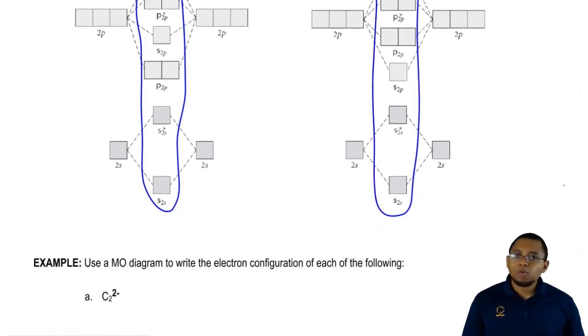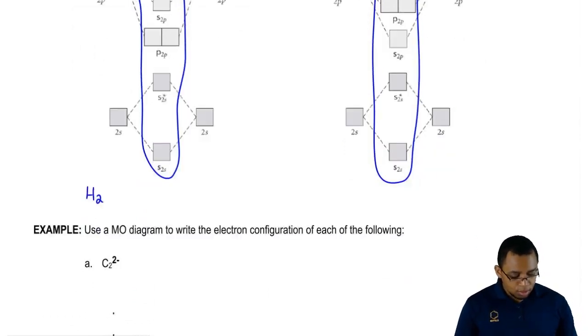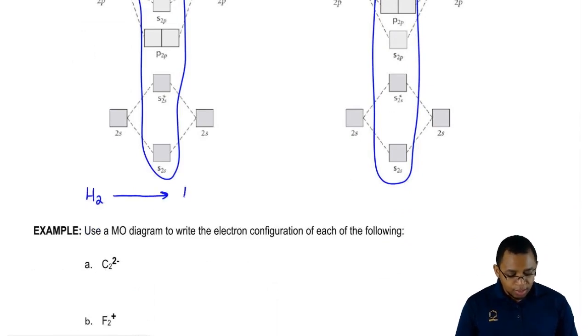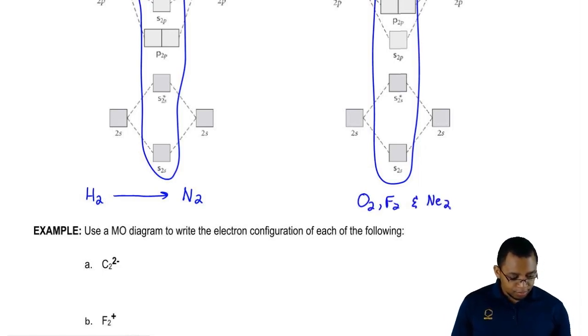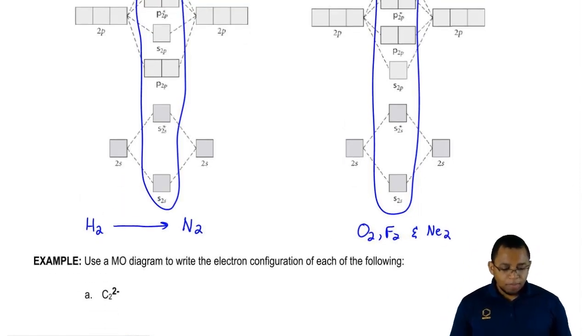Here's the thing. The one on the left deals with hydrogen H2 to N2 on the periodic table. Hydrogen all the way to nitrogen deals with the one on the left. The one on the right deals with O2, F2, and Ne2.